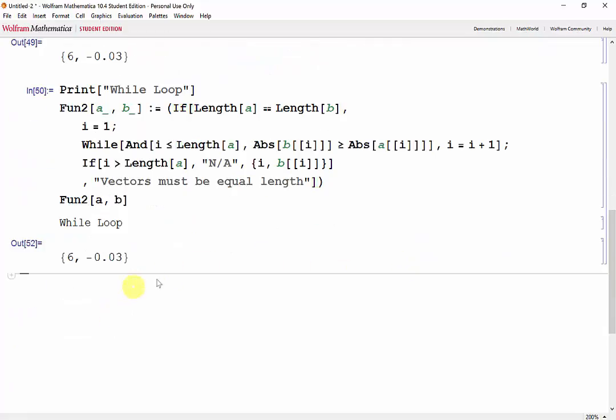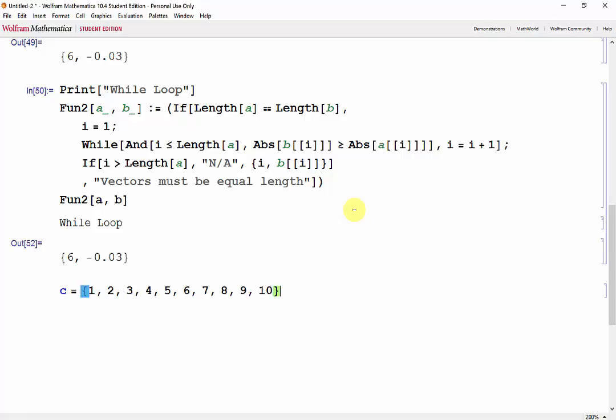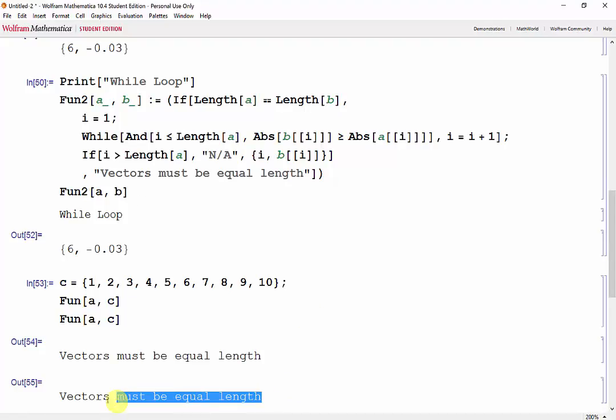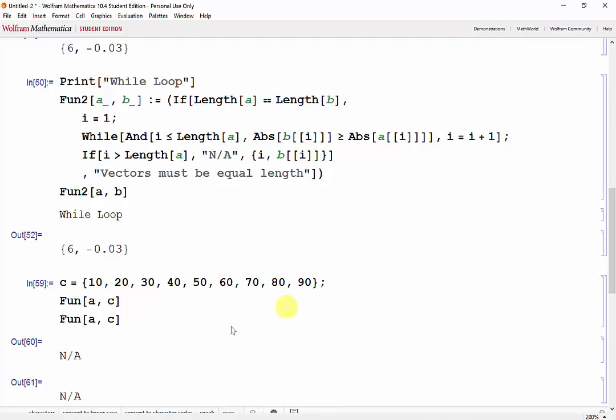Now let's test some vectors that give us either one of the errors. So let's say we have a vector that has a length greater than a. So we'll need a vector that's 10 elements long. Now let's test that with each of our functions. And we get the error that the vectors must be equal length. Alright. Now let's try to get the other error. And we got the error N/A.